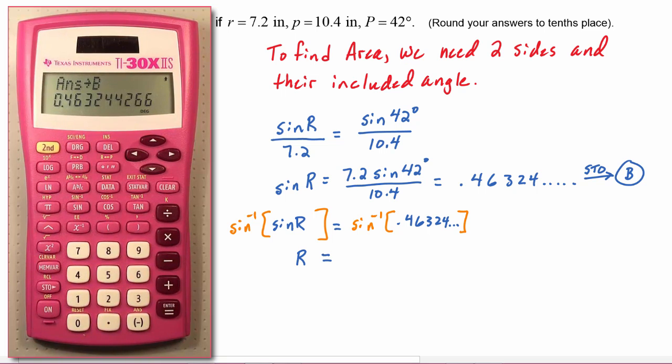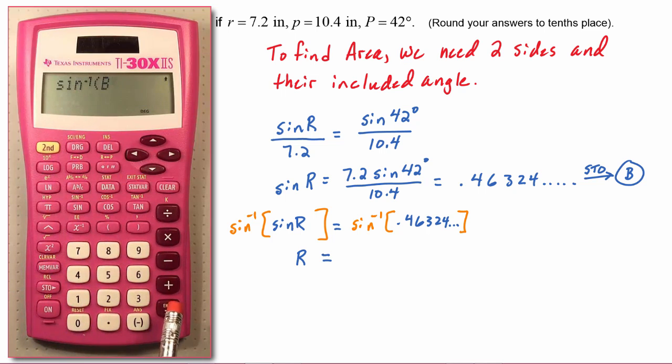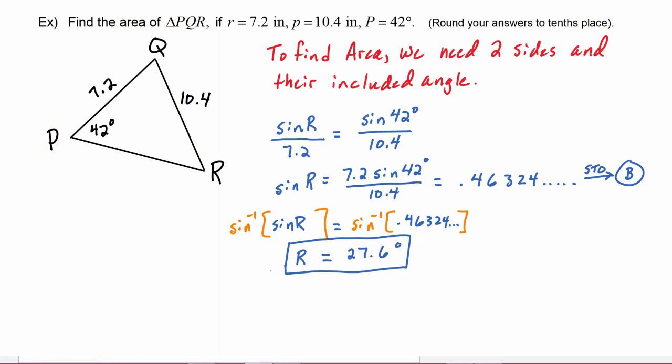We find out that R is equal to, on your calculator you'll need to do second, sine inverse, memory variable, cursor over to the B and hit enter, close your parenthesis and hit enter. And in this problem we have to round our answers to the tenths place, so we find out that R is 27.6 degrees. Box that in in your work and we can fill it in in our diagram here, 27.6 degrees.